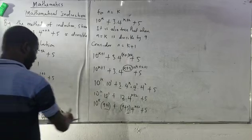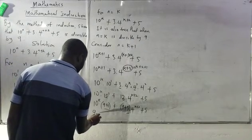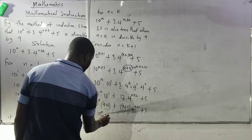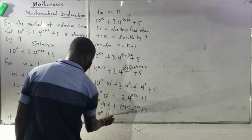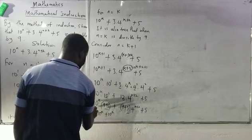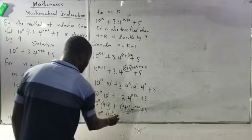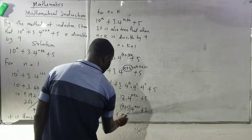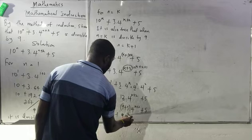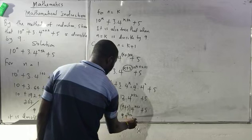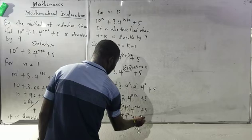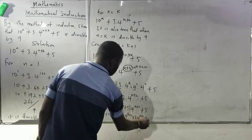By opening the brackets, I get: 9 dot 10^k plus 10^k, then opening the next bracket, plus 9 dot 4^(k+2) plus 3 dot 4^(k+2) plus 5. There is no magic here — I simply expanded the brackets.